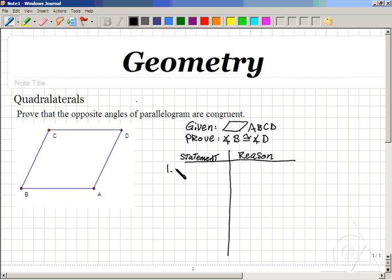Well, to prove this, we'll first write down our given, that parallelogram A, B, C, D is indeed our given.